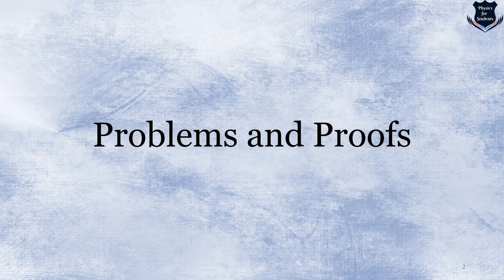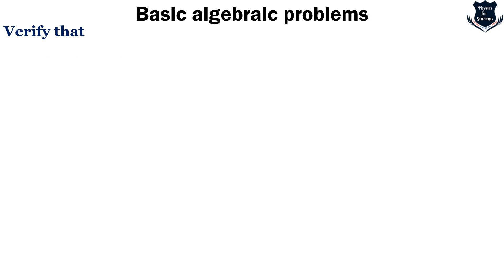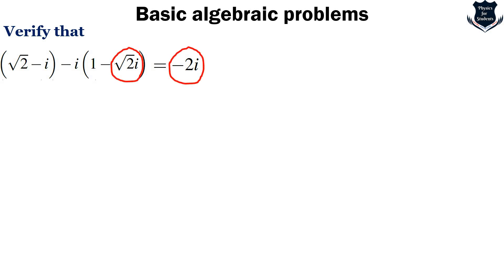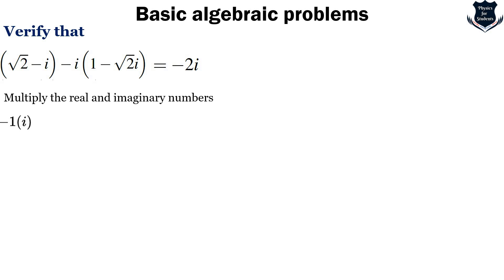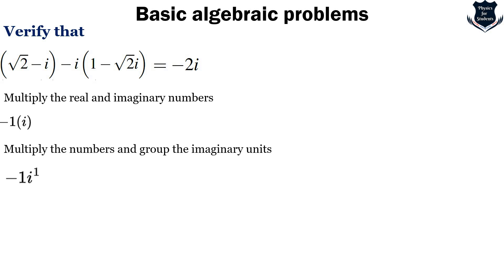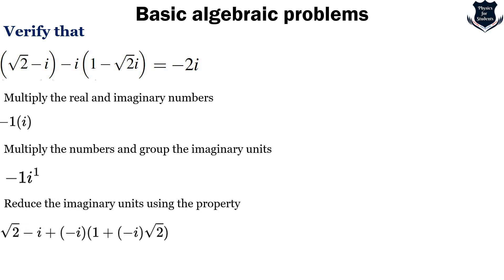First let me show you some problems and how you can show the proofs. We want to verify that the square root of (-2 - i)(-i) equals 1 minus √2·i, which equals -2i. As soon as you look at the problem you see there is some kind of equality between √2·i and -2i. That gives a hint that we need to multiply the real and imaginary numbers first, that is 1·i, then take the approach of multiplying and grouping by the imaginary units (-1)·i^1.